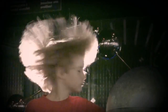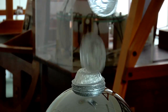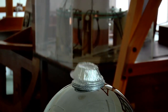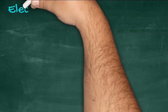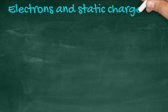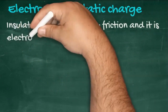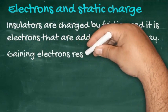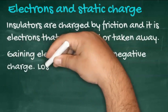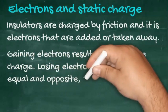These are perhaps what comes to mind when we think of static electricity in physics. It is insulators that are charged by friction, and it is electrons that are added or taken away. Gaining electrons results in a negative charge; losing electrons results in an equal and opposite positive charge.